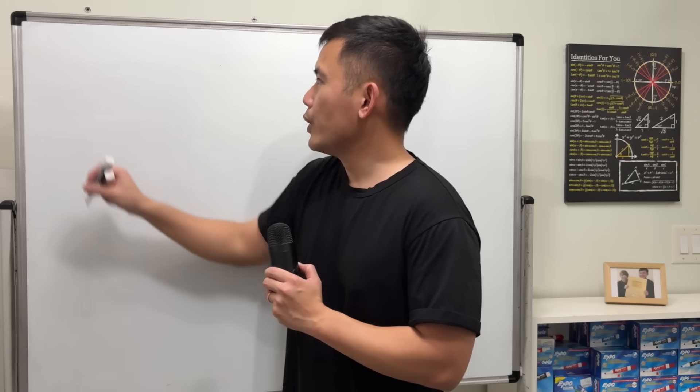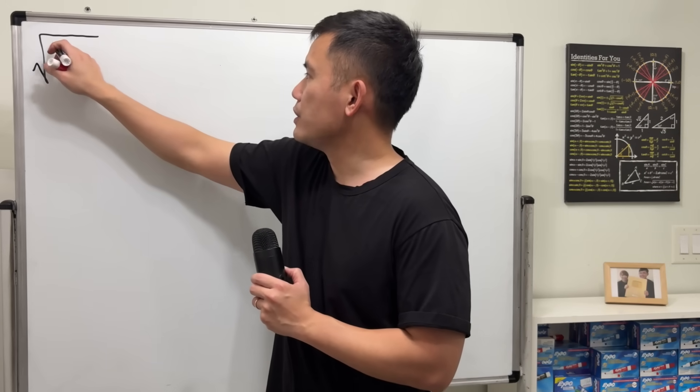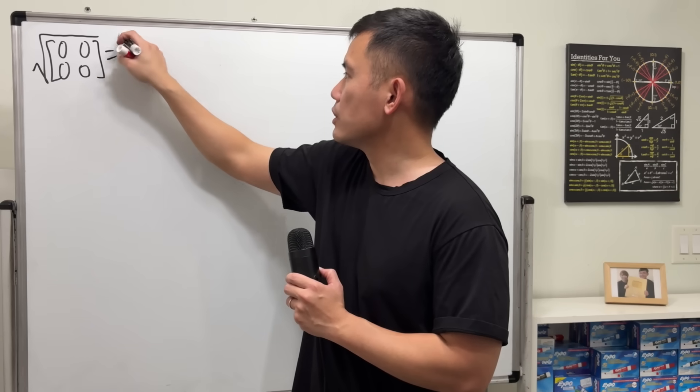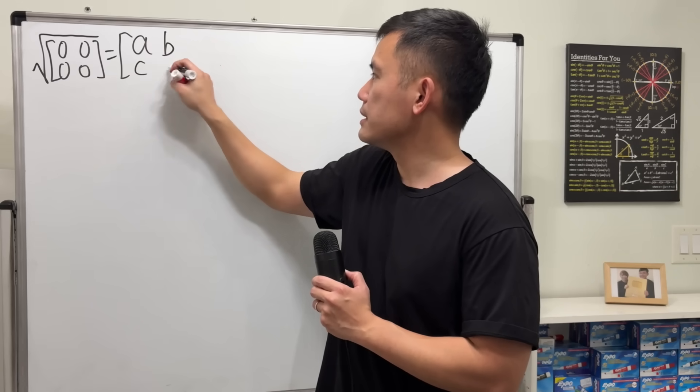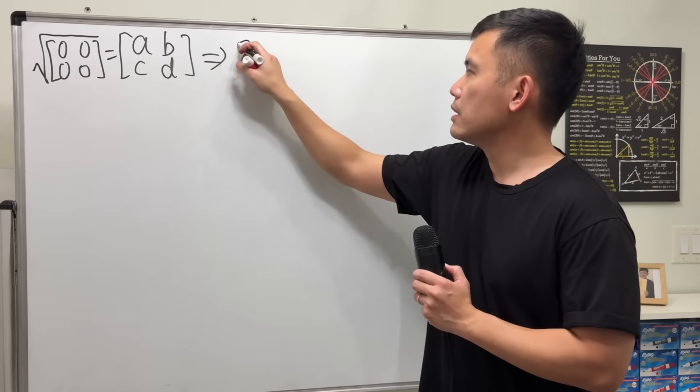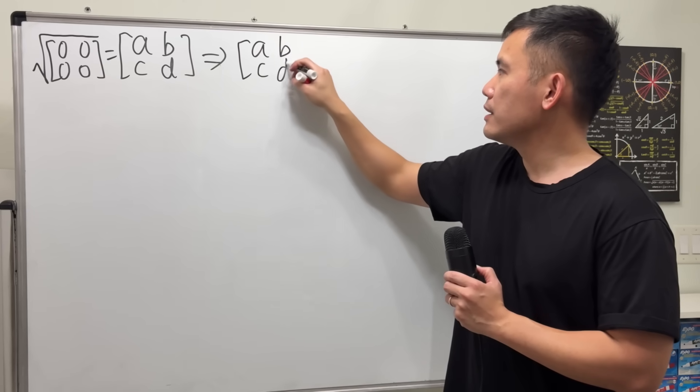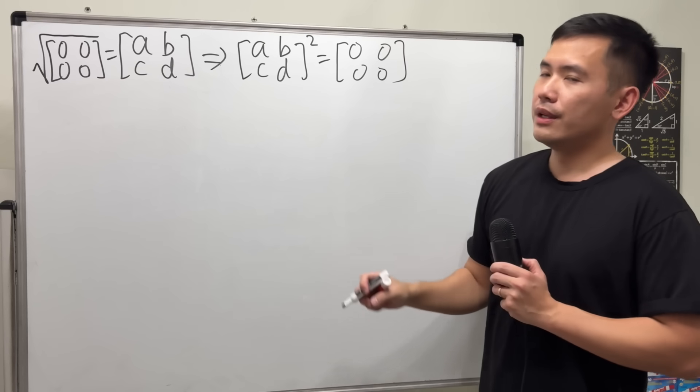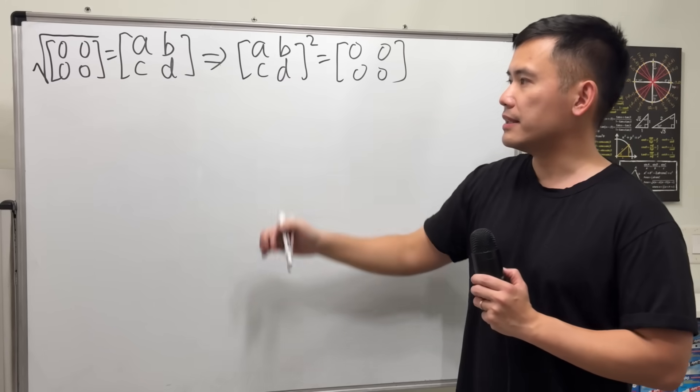Okay, here we go. We want the square root of the 2 by 2 zeroes matrix. And let's say the result is just [a, b; c, d]. So this means if we square this [a, b; c, d], we need to end out with [0, 0; 0, 0].